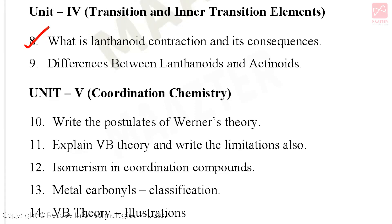Unit 4 continued: Lanthanides and Actinides — very important 5-mark topic. Unit 5: Coordination Chemistry. 5-mark topics include: Werner's theory, VB theory, coordination compounds exhibiting geometrical isomerism, metal carbonyls and their classification. VB theory illustrations — 4 illustrations from the book, and 4 illustrations with at least 1 for 5-mark questions.